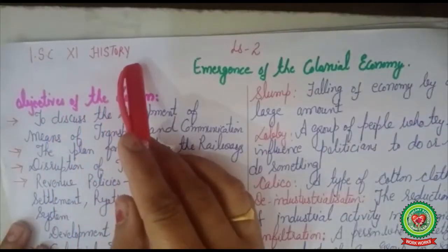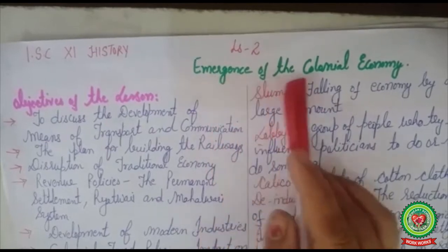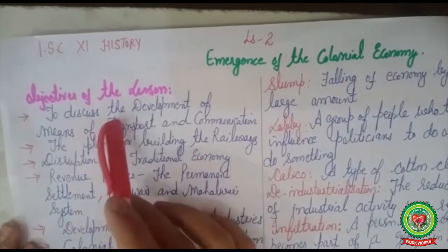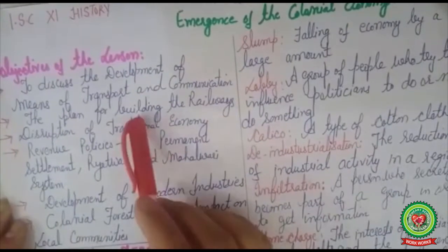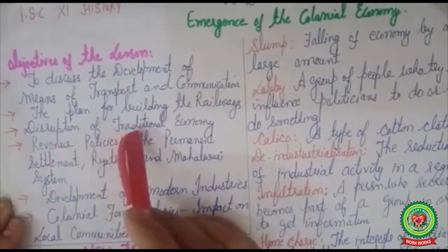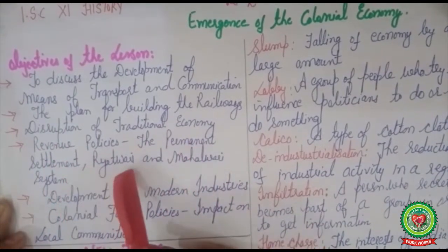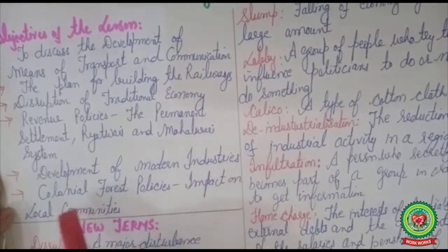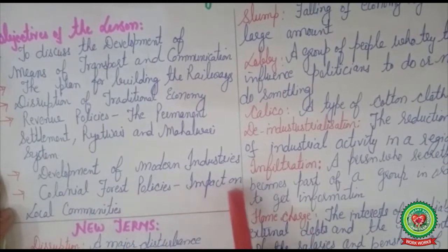Welcome to ISE Plus One History class. We are going to continue with the same topic: Lesson Two, Emergence of Colonial Economy. The objectives of this lesson are: to discuss the development of means of transport and communication, the plan for building the railways, disruption of traditional economy, the revenue policies including the Permanent Settlement, Ryotwari, and Mahalwari system, development of modern industries, and colonial forest policies and their impact on local communities.